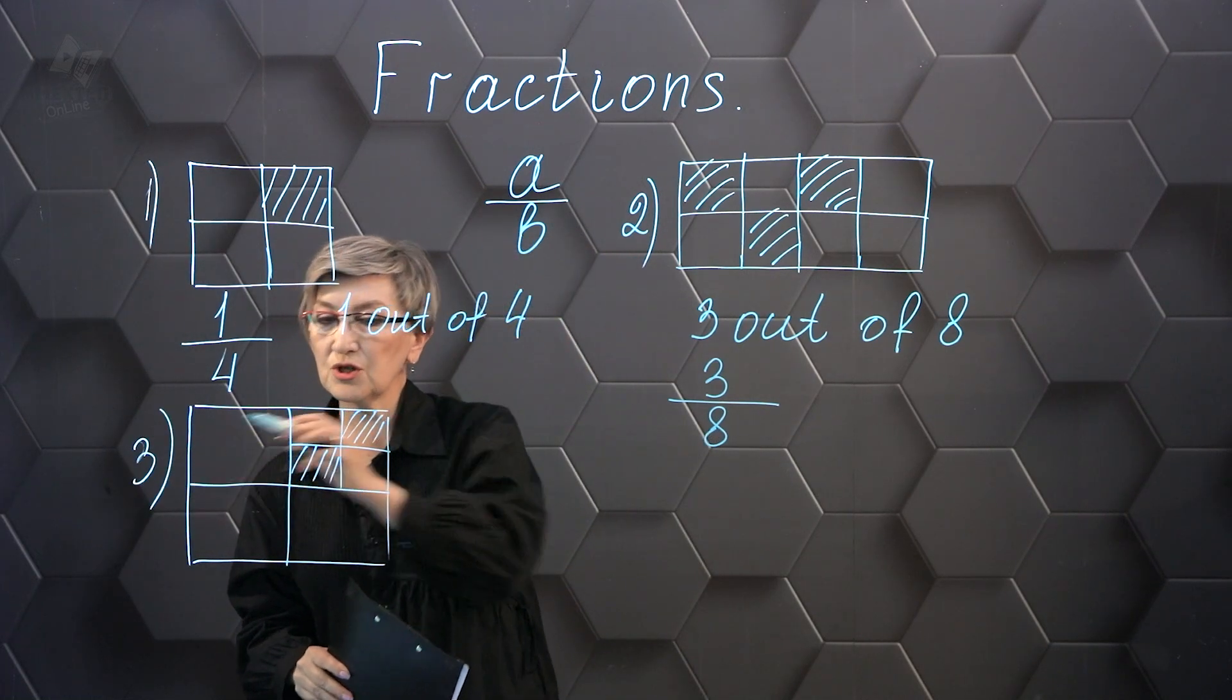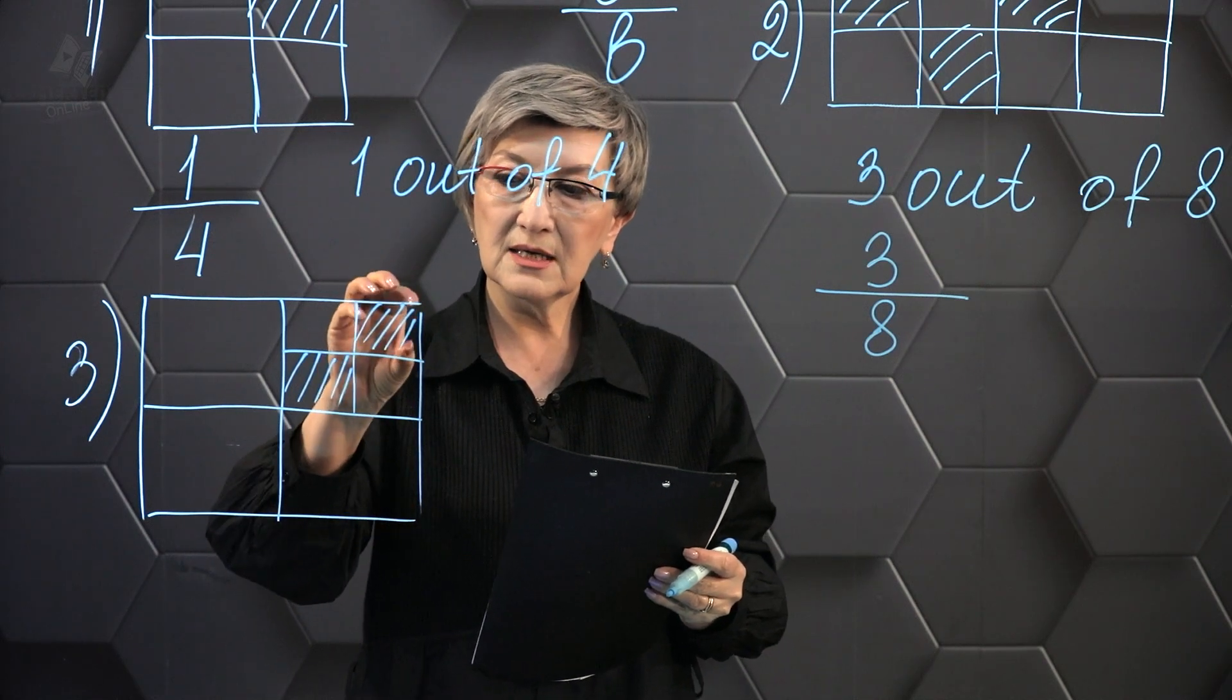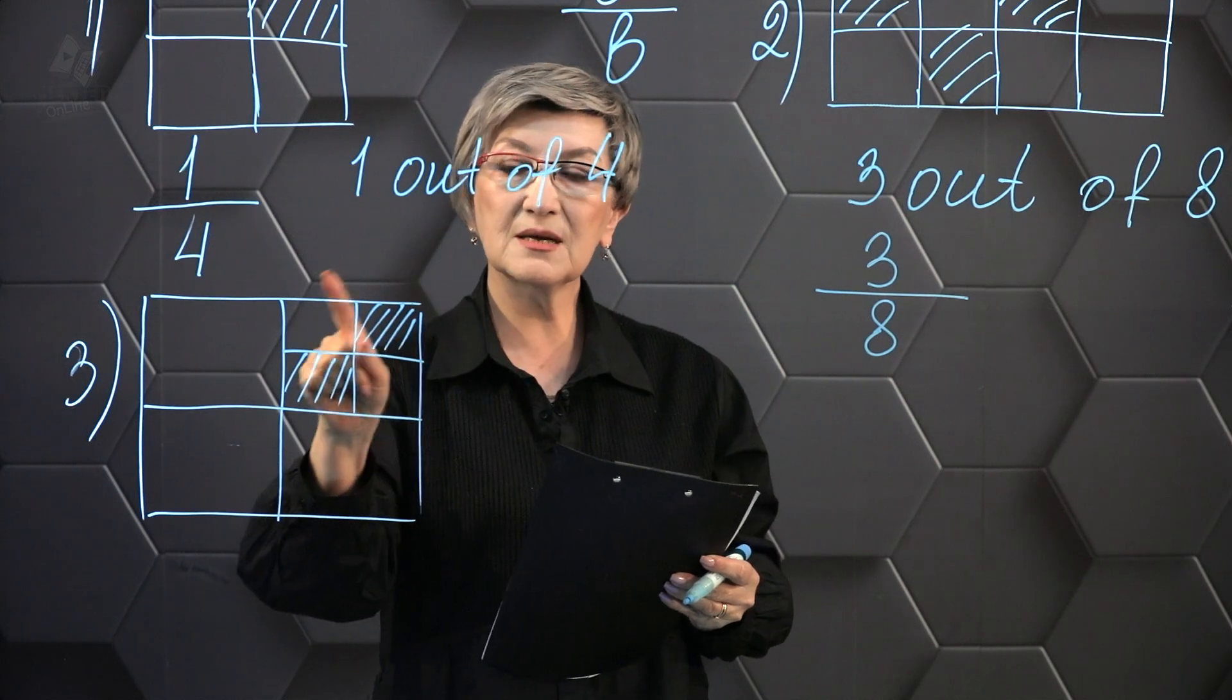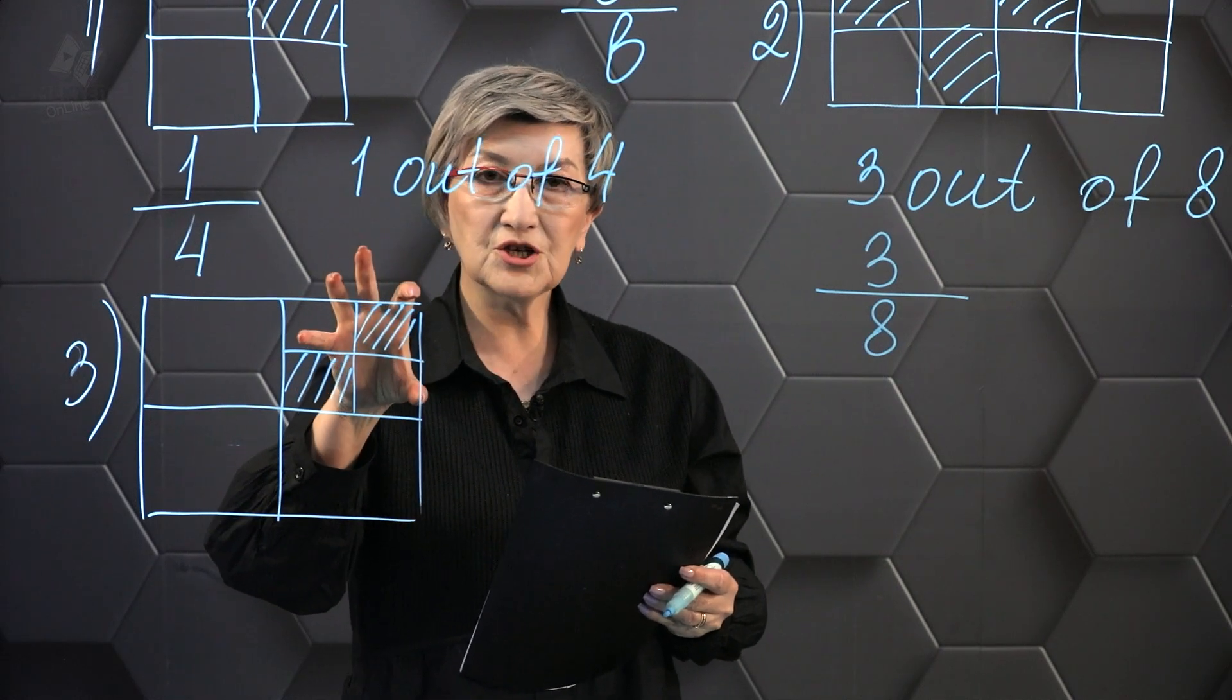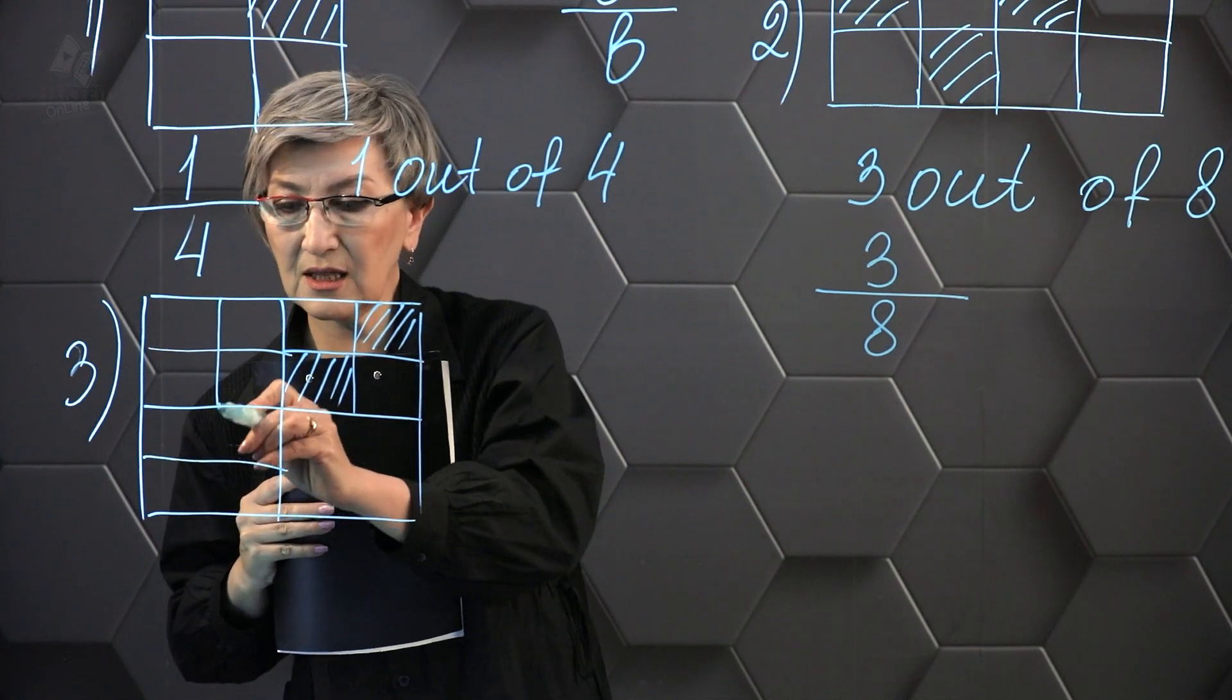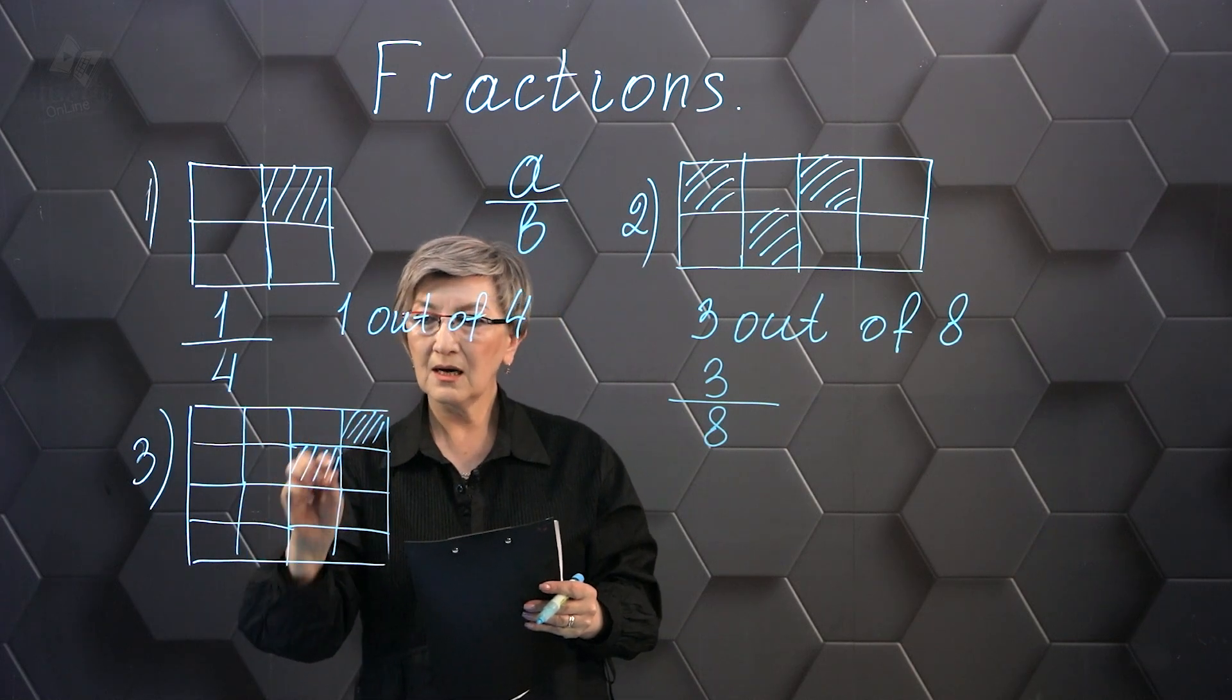Third example. We need to write down a fraction which represents the shaded part. But notice that these parts are not equal to each other. This part here is different from this part. So first, in order to write the fraction correctly, we need to get equal parts. What am I going to do? We see that one-fourth of our square is divided into four more equal parts. So I'm going to first divide all the other parts into equal parts. And only then will I write down the fractional number.